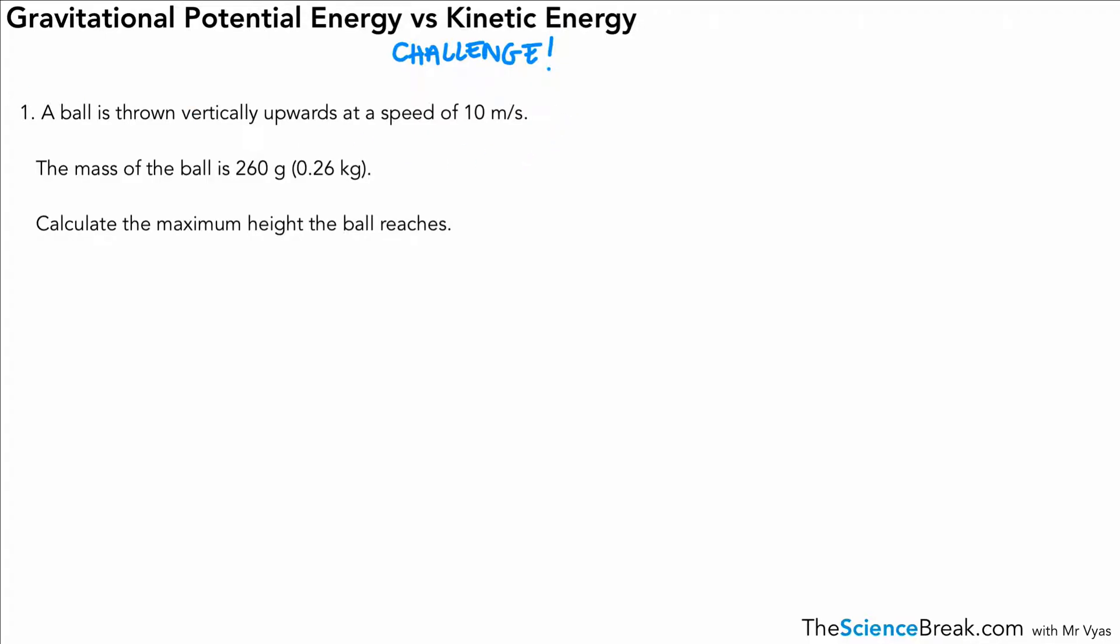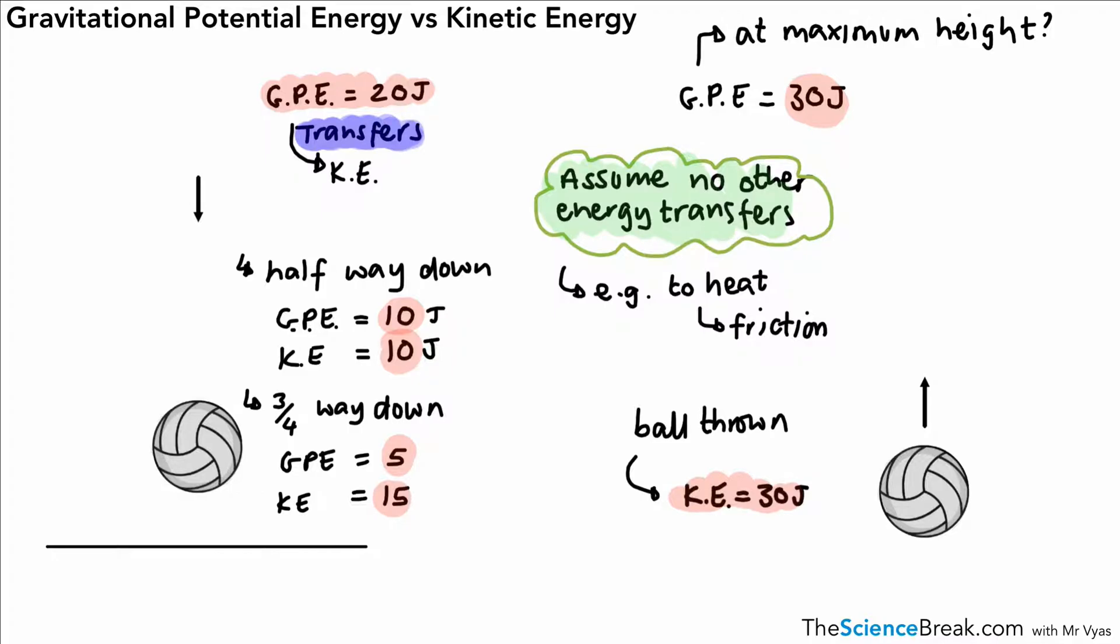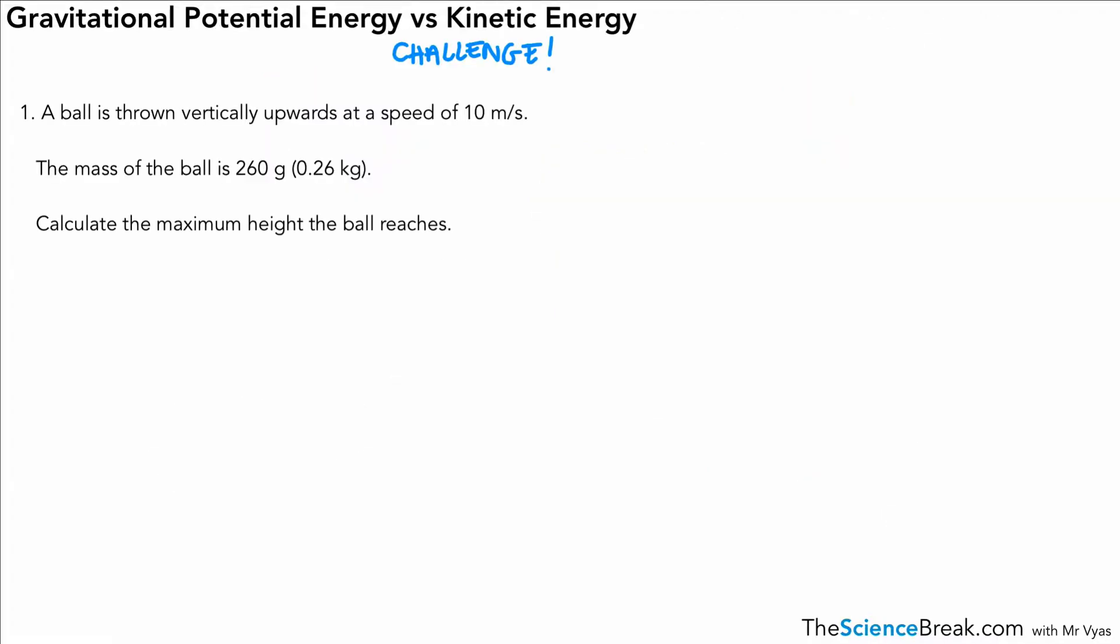We've got a question there on the left-hand side, question number one. It talks about a ball that is thrown vertically upwards at a speed of 10 meters per second. The mass of the ball is 260 grams, and they have kindly converted that to kg for us. We want to calculate the maximum height the ball reaches. Key bits of information: we've got a speed of 10 meters per second, the mass is 0.26 kg, and we want to calculate the maximum height the ball reaches.